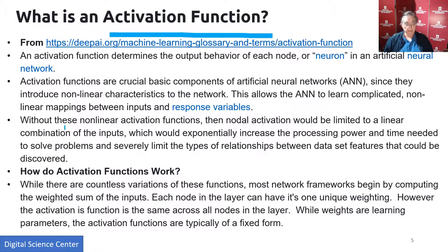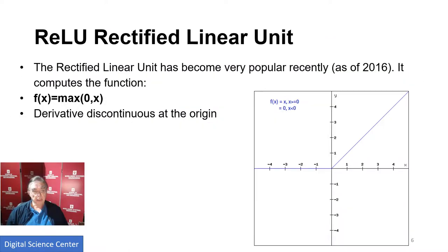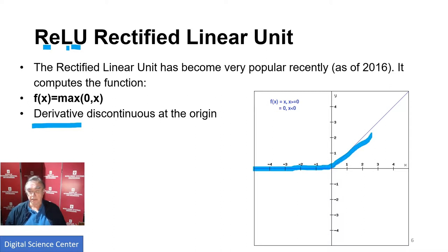Activation functions produce non-linearity, and it's this non-linearity that is producing the much better performance of neural nets than previous approaches. Here is one of the more popular activation units called a rectified linear unit — RE for rectified, LU for linear unit. It's zero up to argument zero, and then it's just y equals x thereafter — very simple. It's the max of zero and x, replacing all negative values by zero.